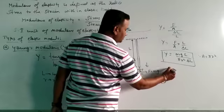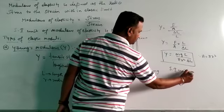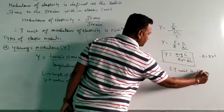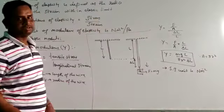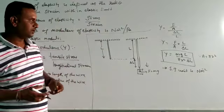For Young's modulus, the SI unit is Newton per meter square. The dimensional formula is M to the power 1, L to the power minus 1, T to the power minus 2.